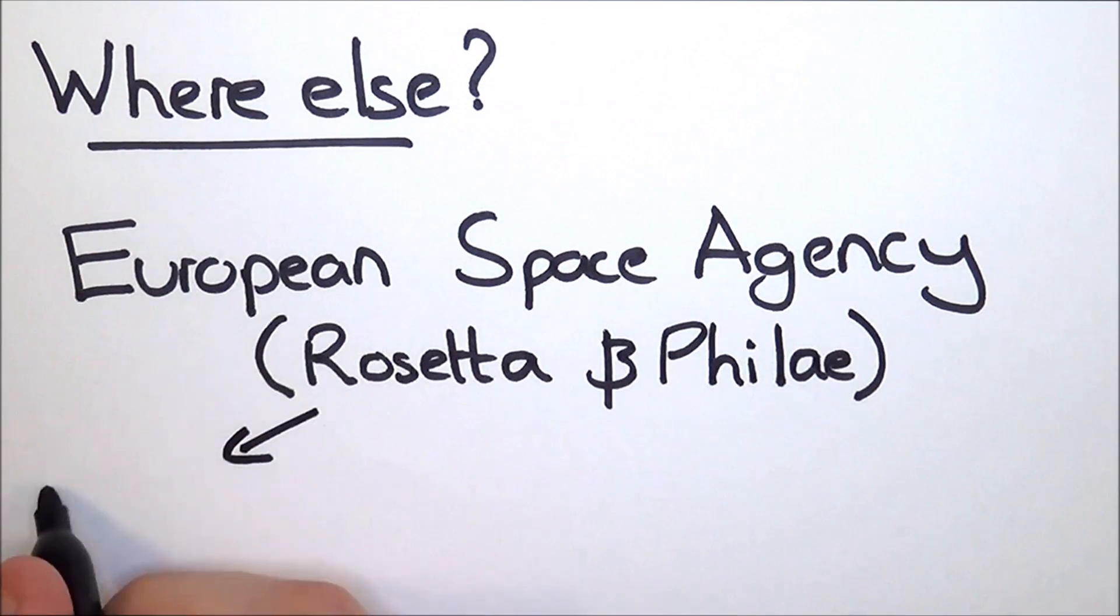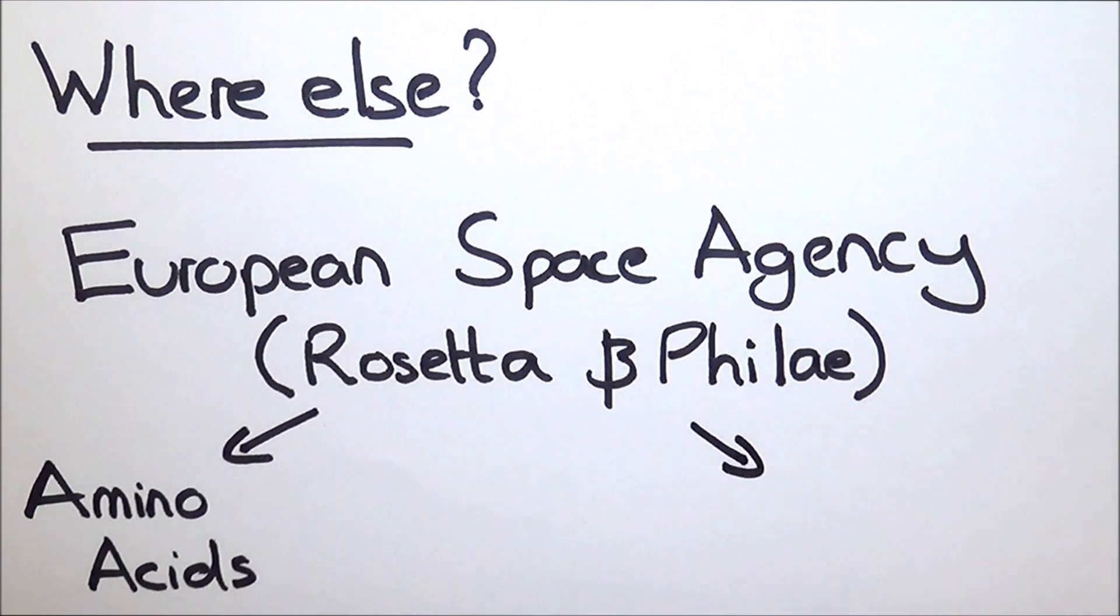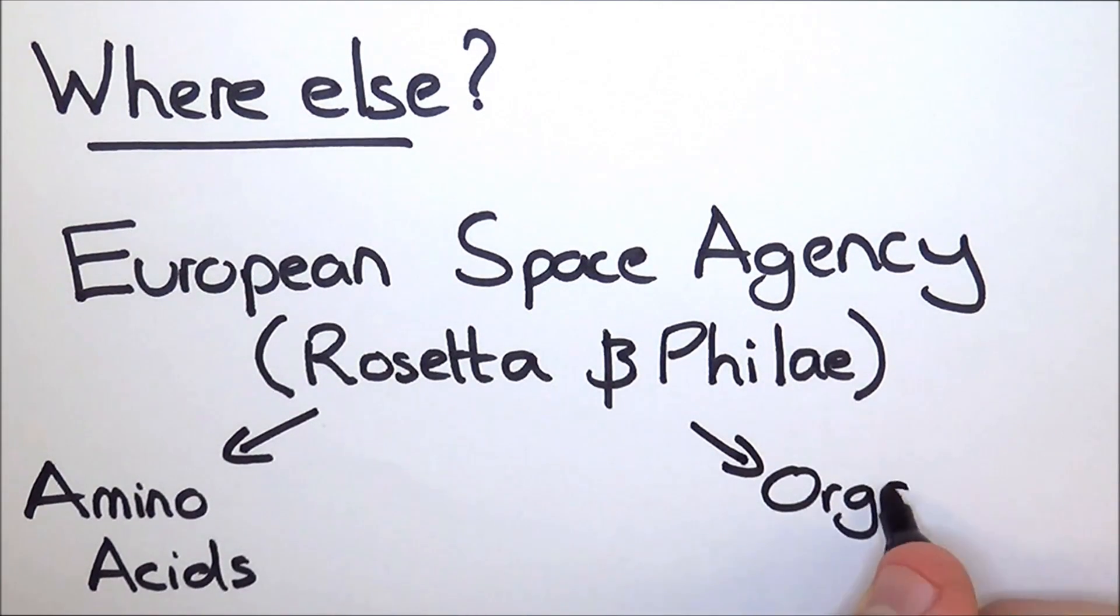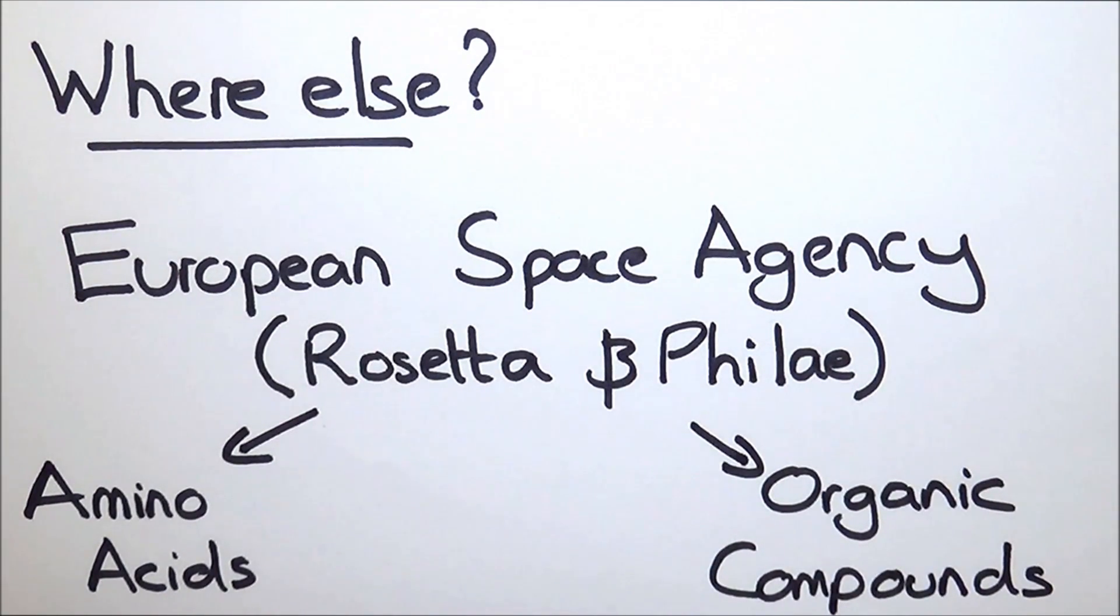So what did they find? Well, they directly detected amino acids, which are the building blocks of proteins, and a rich selection of organic compounds in the dusty atmosphere of the comet. This all reinforces the idea that life came to Earth via a comet. However, this is not what they think happened now.